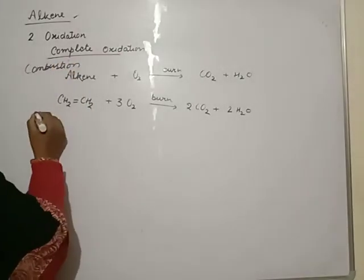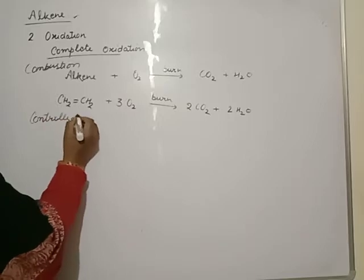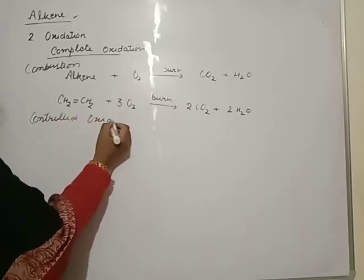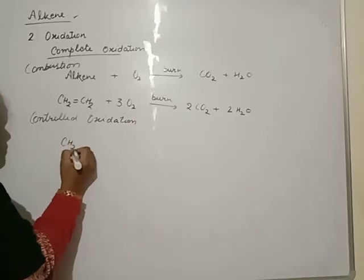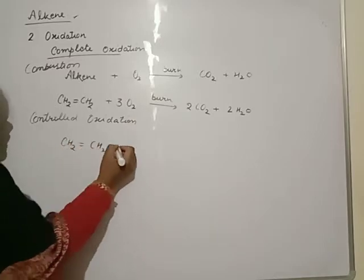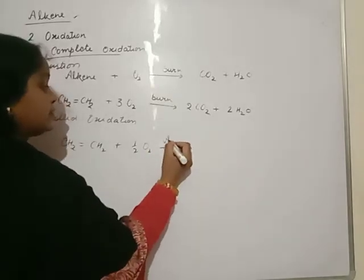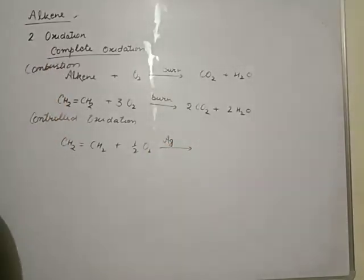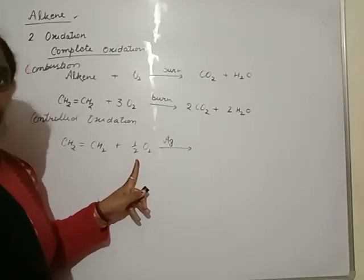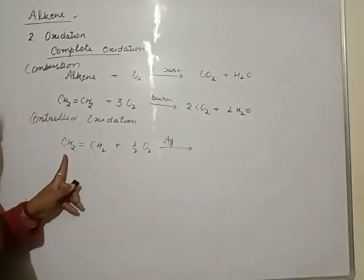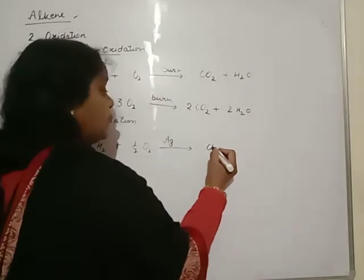Further, controlled oxidation. On controlled oxidation, that means oxidation under any catalyst. If alkene is oxidized in air in presence of silver, one atom of silver or half molecule of oxygen will be required. For reaction of alkene with silver, it will give epoxides.